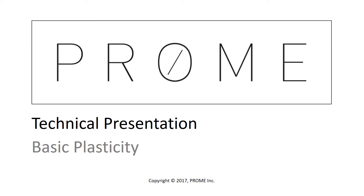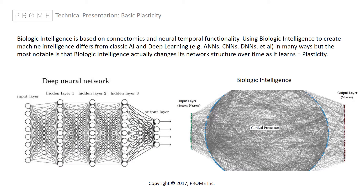That difference is plasticity — plasticity in the same manner that animals change their nervous systems when learning. Prohm's biologic intelligence is based on the emulation of connectomics and neural temporal functionality. There are many differences between the old AI paradigms and biologic intelligence, but the one I want to show in this presentation is plasticity.